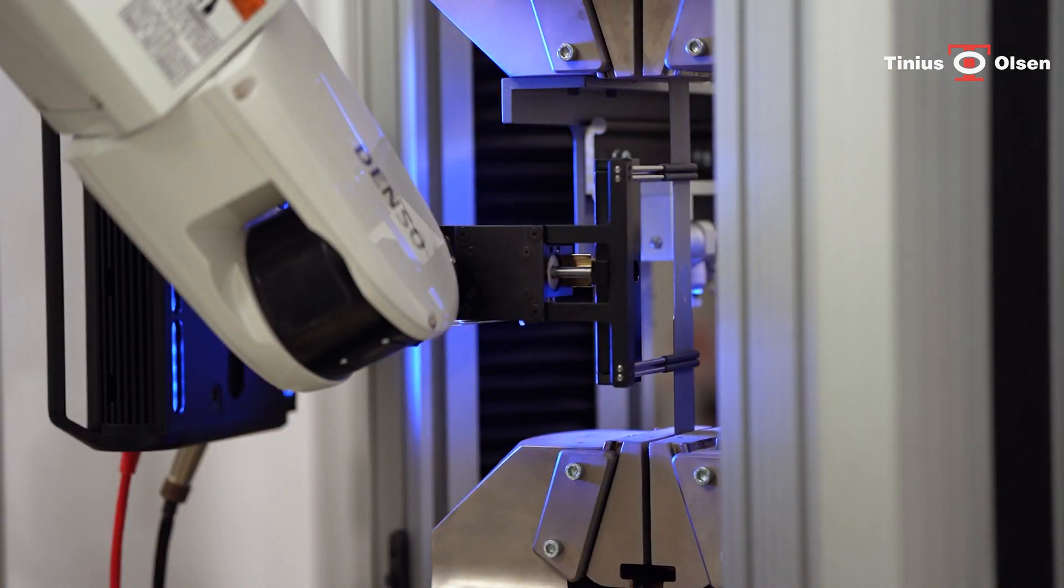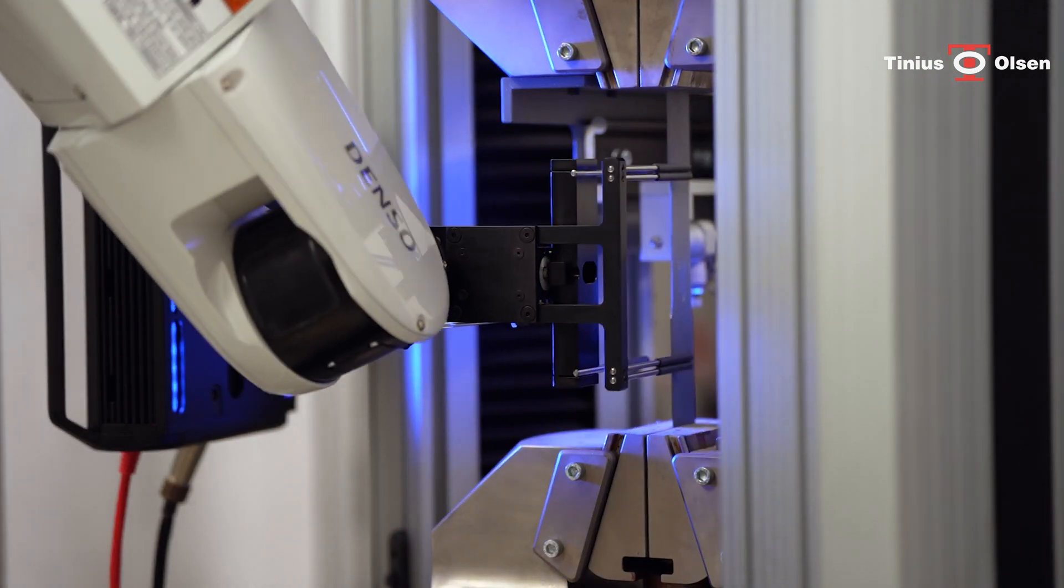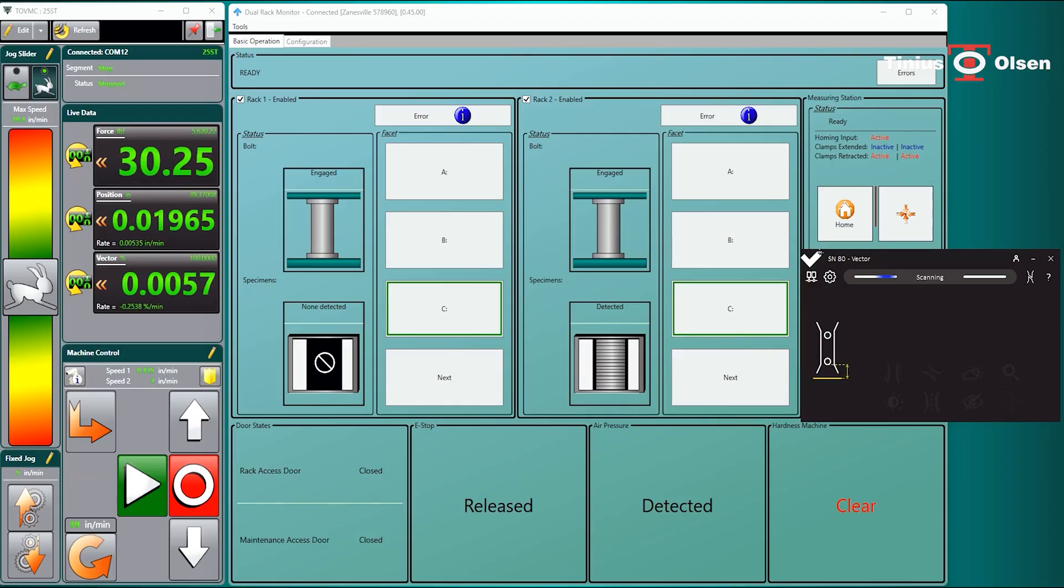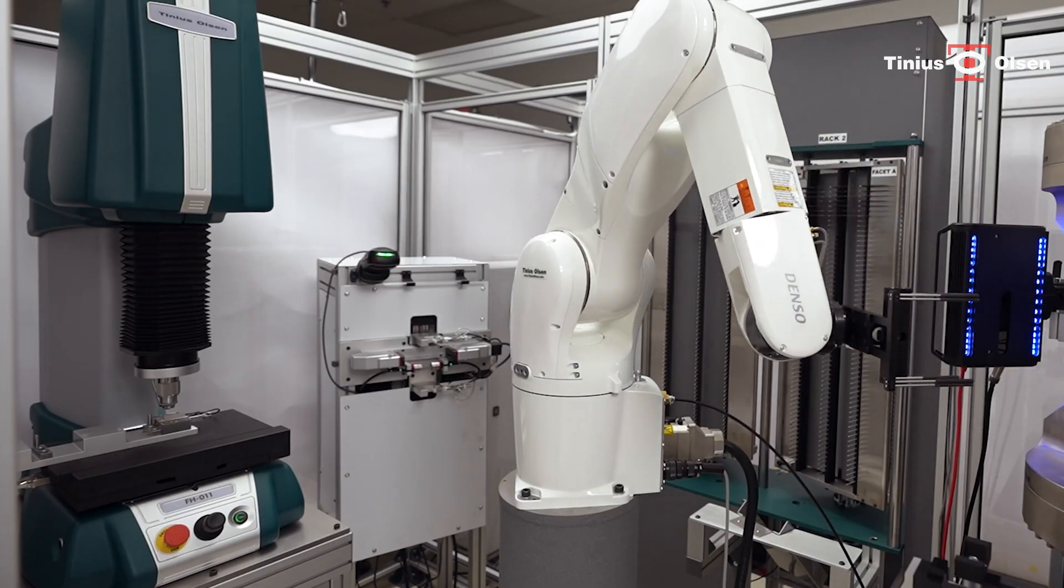The pneumatic wedge grips will secure the specimen and the vector extensometer module will detect the specimen in no time. You will see the detection of the specimen on the vector extensometer GUI in your dual-screen PC station.